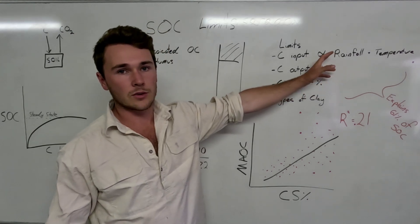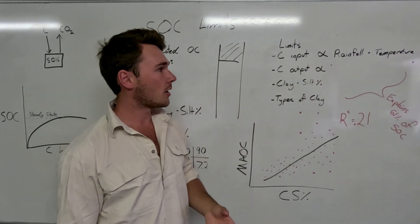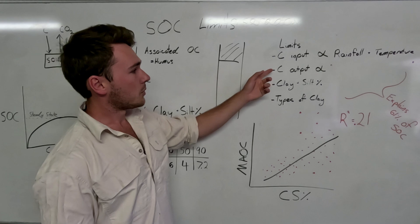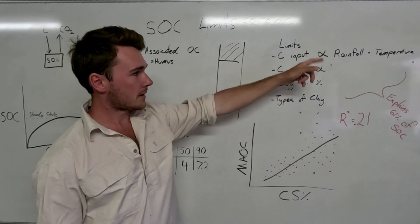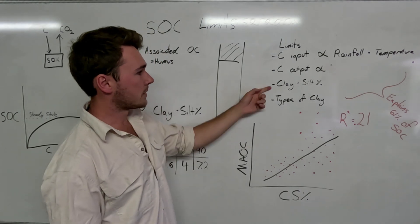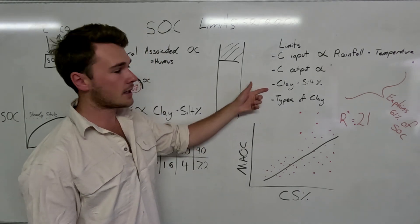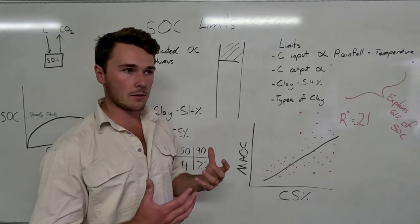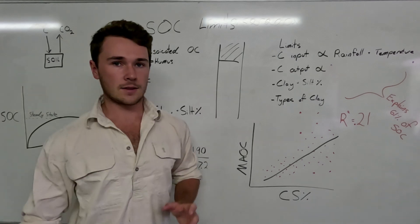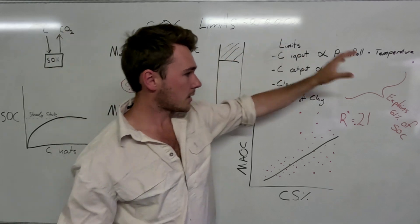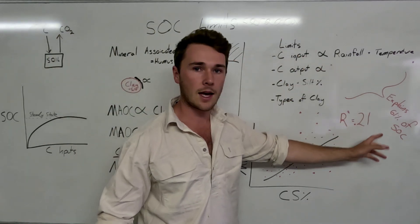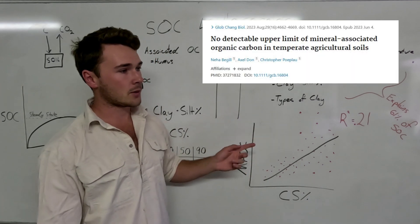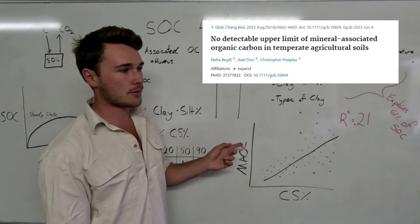With increased rainfall and temperature we get more biomass production and root exudates, but we also get an increased mineralization rate from microbes, so it more or less balances out. Carbon output is also dependent on rainfall and temperature. We're also limited by clay and silt content and the types of clay — some clays are better at holding mineral associated organic carbon than others. But here's where things get tricky: all of that only explains 61% of our soil organic carbon, as found in a recent 2023 study.